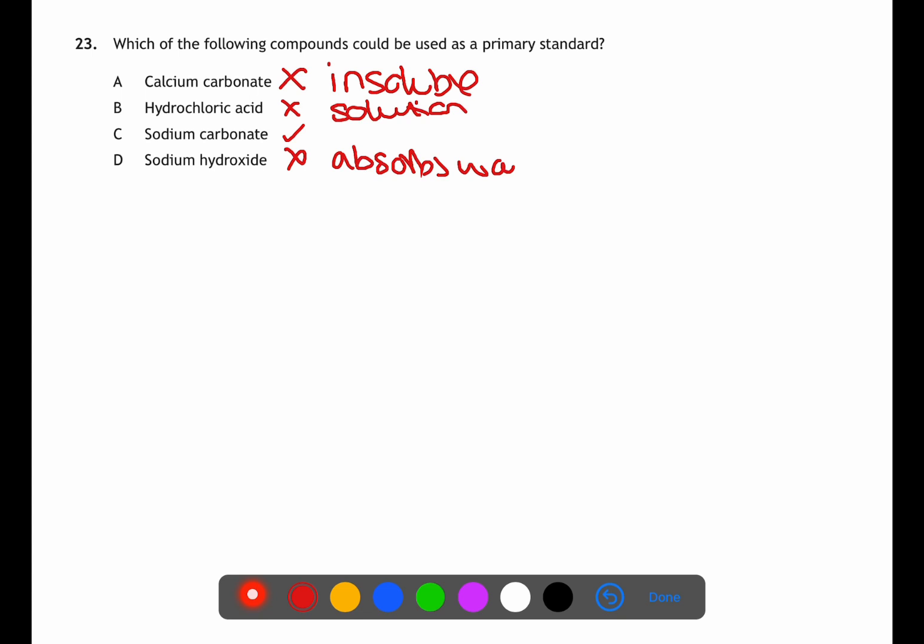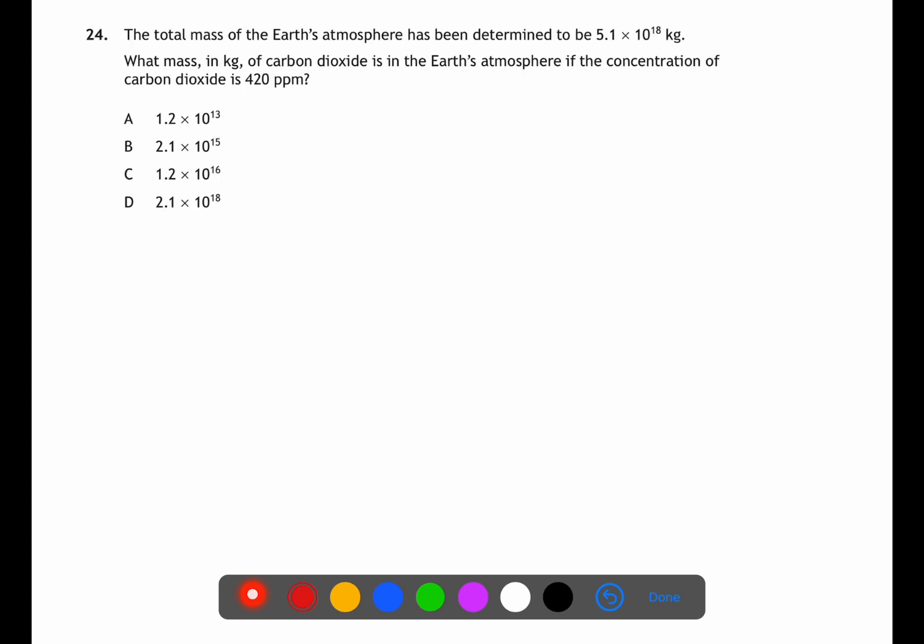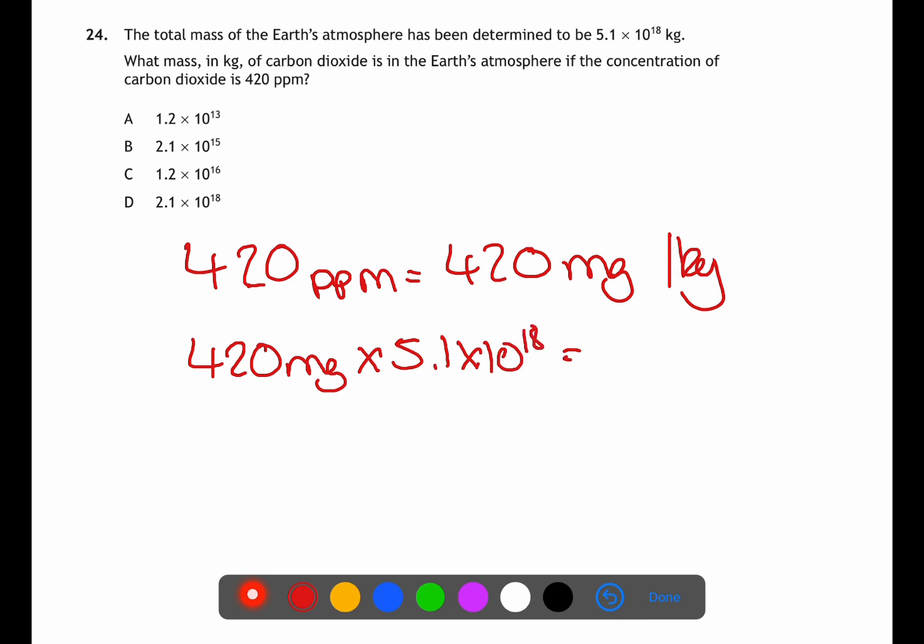Question 24 is requiring you to do a ppm calculation. PPM stands for parts per million and is equivalent to milligrams per kilogram. You've been told that the concentration of carbon dioxide is 420 ppm. This is the same as 420 milligrams per kilogram. The question tells you that the earth's atmosphere is 5.1 times 10^18 kilograms. If we multiply the 420 by 5.1 times 10^18 we'll get the number of milligrams of carbon dioxide. By dividing this by 1 million we will find the number of kilograms. This calculates to be 2.1 times 10^15.